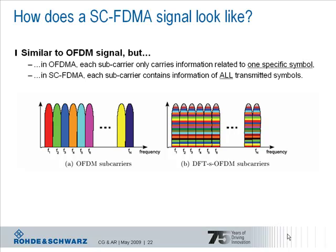When we compare classical OFDM used in the downlink and Single Carrier FDMA or DFT-spread OFDM used for the uplink, in OFDM each subcarrier carries only information related to one specific symbol. This is indicated by the color used for the subcarriers, as you can see on the left-hand side of the graph. In Single Carrier FDMA, each subcarrier contains information from all transmitted symbols — you can see on the right-hand side that each subcarrier carries a little bit red, green, blue, orange, and so on.